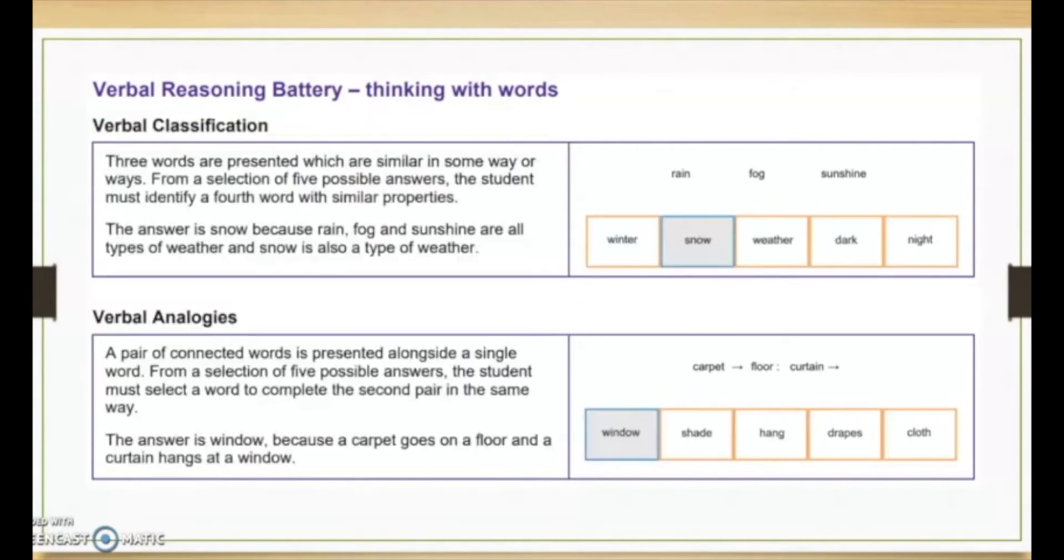And here we just have a little bit more of an explanation. So we see that the first example that we did is called verbal classification. And the second example that we did was verbal analogies. And that's there to pause and read if you'd like. I'll keep moving.